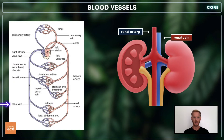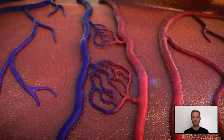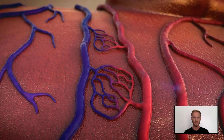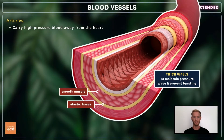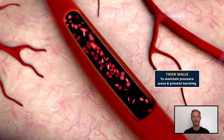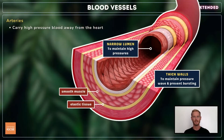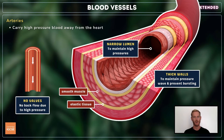For extended, you also need to know how the structures of arteries, veins and capillaries are related to their functions. Arteries have thick muscular walls with elastic fibres and fibrous tissue. This helps to maintain the waves of pressure generated by the heart and prevents damage and the vessels from bursting. Their relatively narrow lumen helps to maintain high pressures, and they don't have valves as pressure is sufficient to prevent backflow.